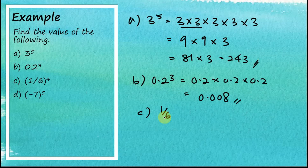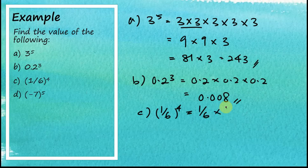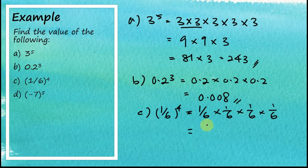For part c, one-sixth to the power of four equals (1/6) × (1/6) × (1/6) × (1/6). Using your calculator, you should get one over 1296.